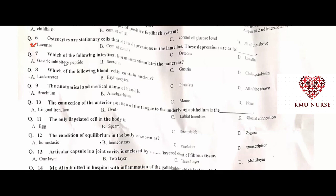Which of the following intestinal hormones stimulates the pancreas? Secretin. B is the correct option. Which of the following blood cells contains a nucleus? Leukocyte. A is the correct option. The anatomical and medical name of the hand is manus. C is the correct option.